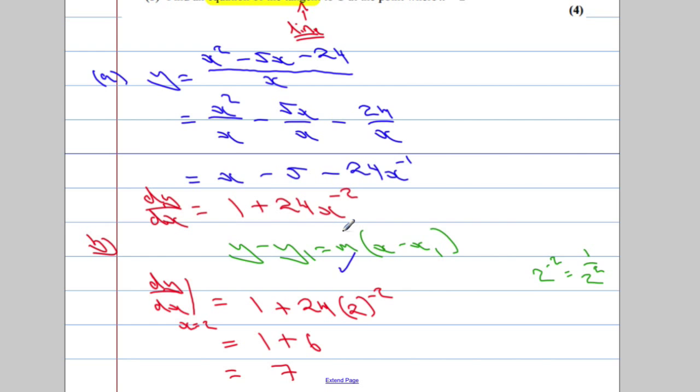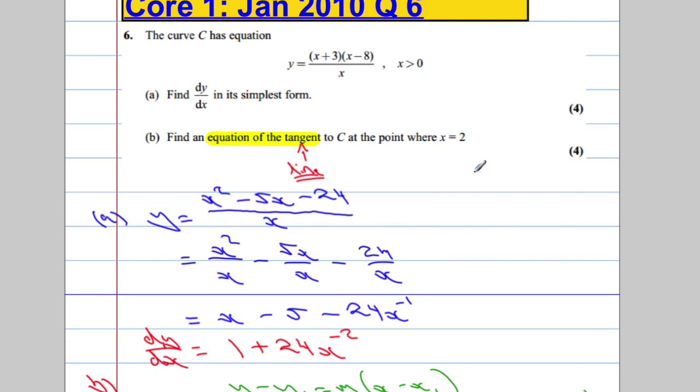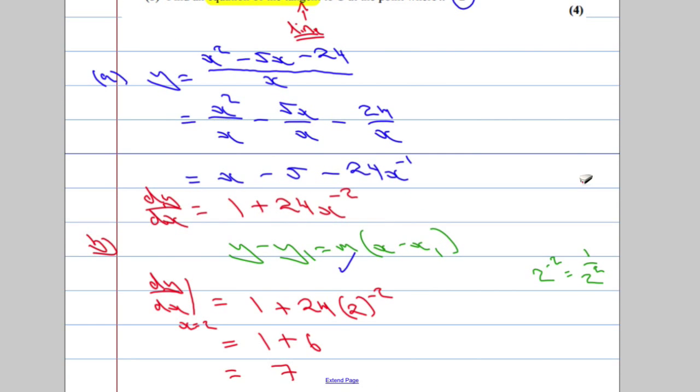Now, I need the point. Well, I know what the x value is. The x value is 2. I need to know what's the y value. To get the y value, we're going to substitute it back into the original function. Remember, this is the value, or this is what y is equal to.